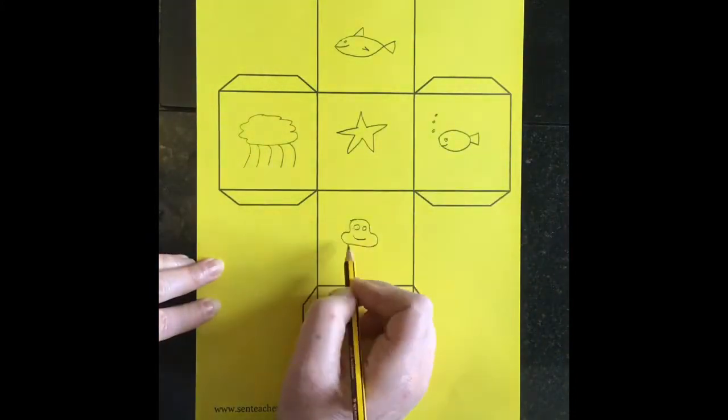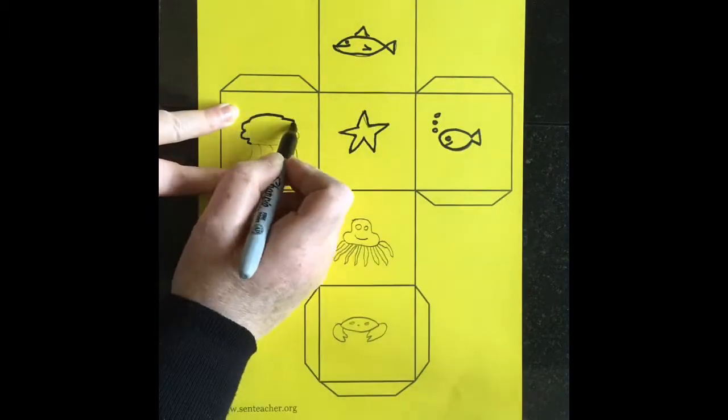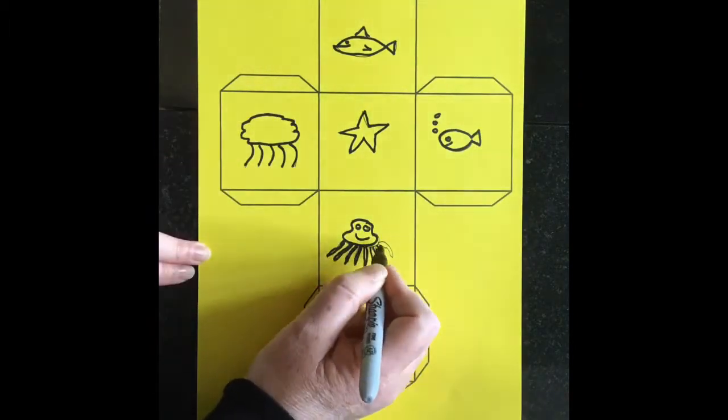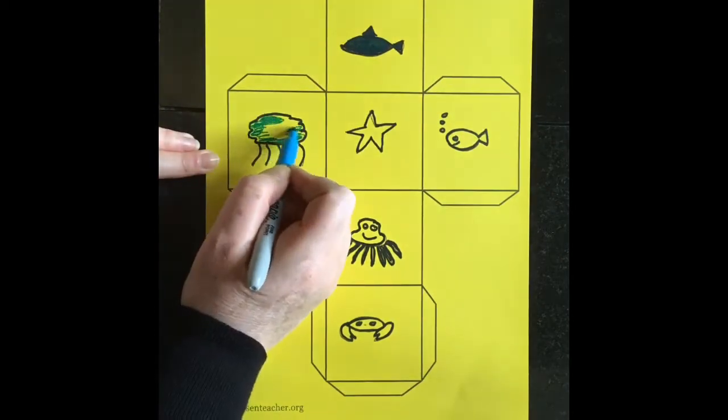I've taken creatures from my story to keep with the theme. Once you've got all your creatures on there, you can color them in. If you don't want to draw them, you can obviously photocopy pictures and stick them on.